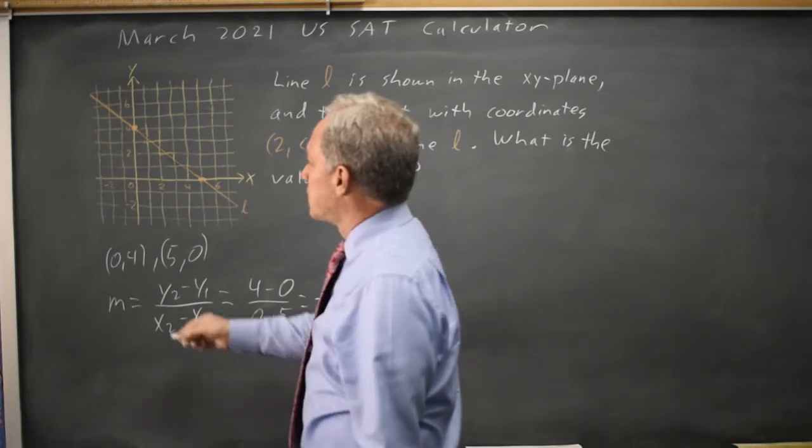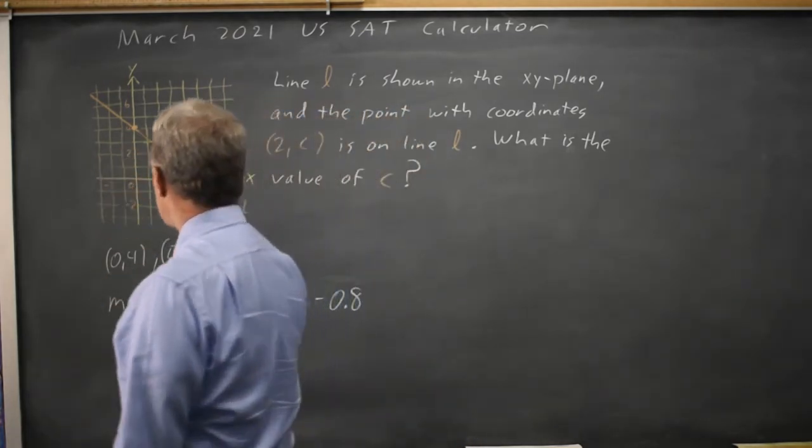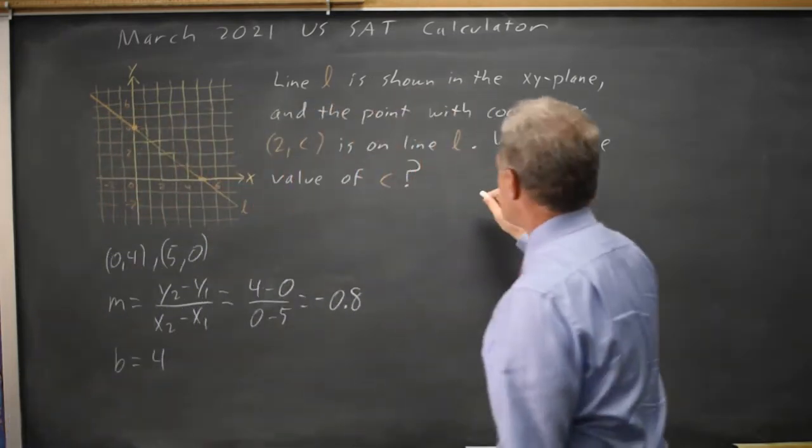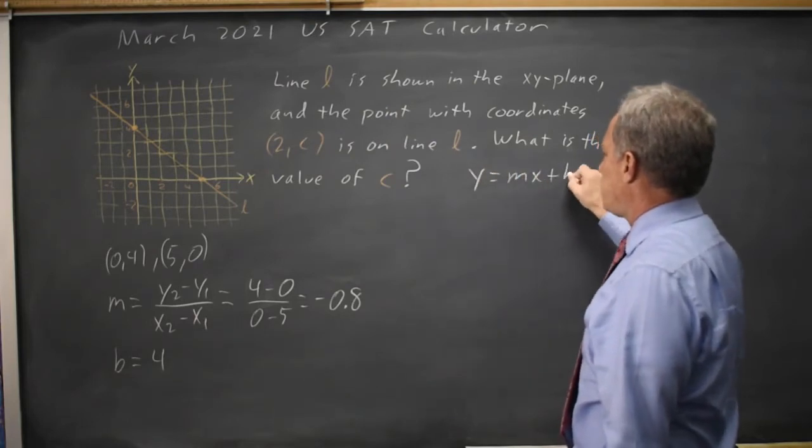And our y-intercept is marked on here as 4. So the value of b is 4 in y equals mx plus b. Slope-intercept y equals mx plus b I just found.